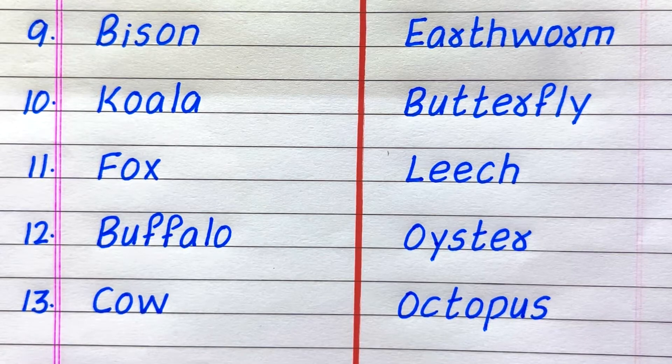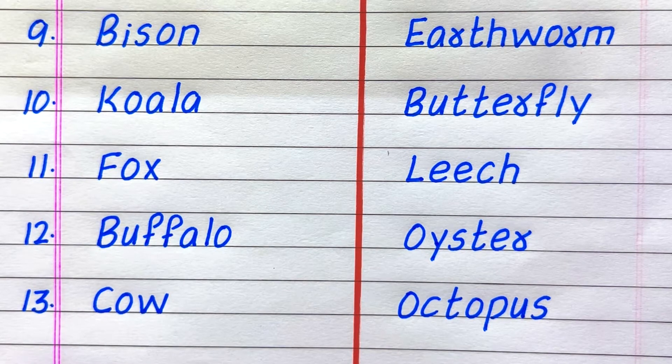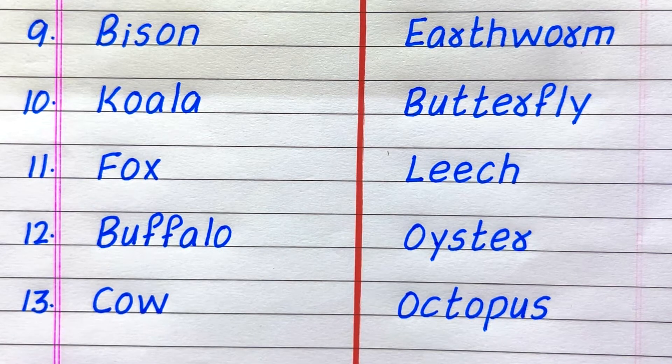9th example of an invertebrate animal is earthworm, 10th butterfly, 11th leech, 12th oyster, 13th octopus.